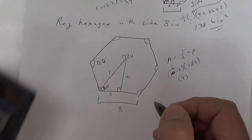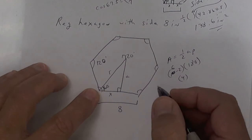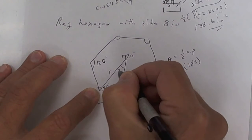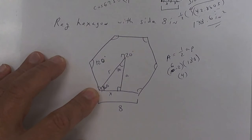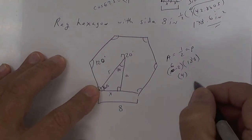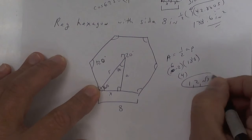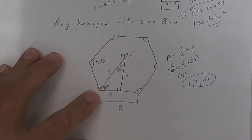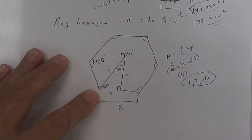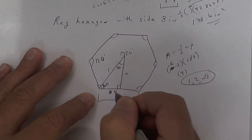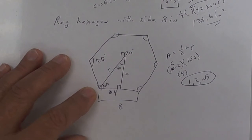Yesterday on the video I might have told you that the 30-60-90 triangle is 1, 1, square root of 2 — no, that's the 45. This one is 1, 2, square root of 3. In any event, we're not using that — we're going to use trig. We know that the side is 8, so cut it in half to get x equals 4. Remember, x is half the side.